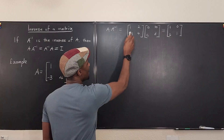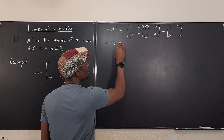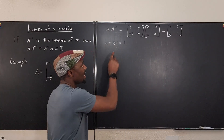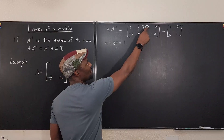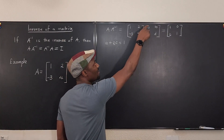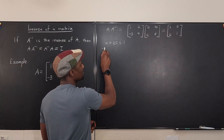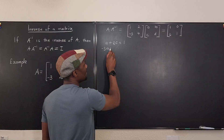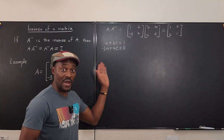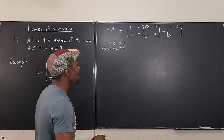So a plus 2c equals 1 — that's our first equation. Now taking the second row and multiplying the first column gives us minus 3a plus 4c equals 0. We can now solve this system using algebra.